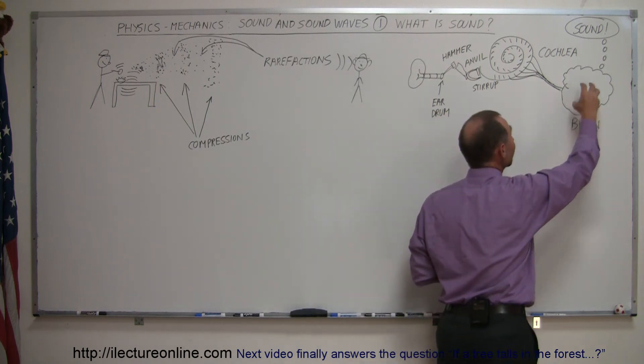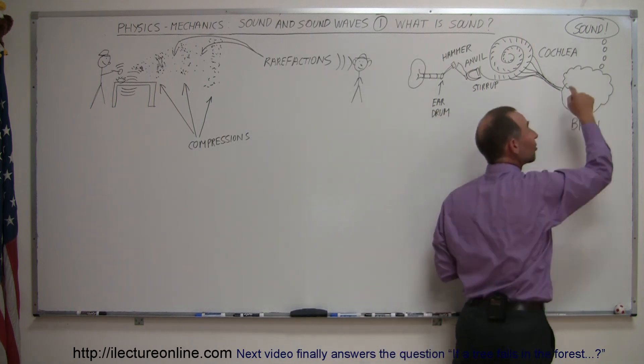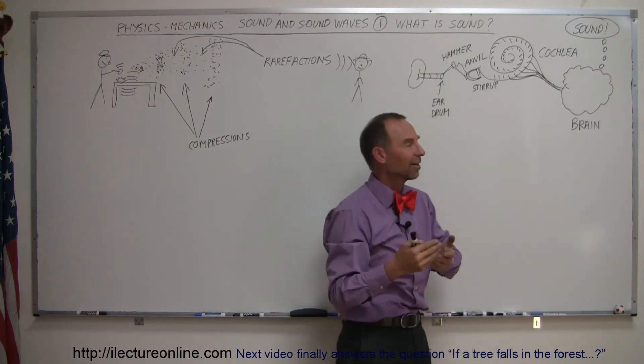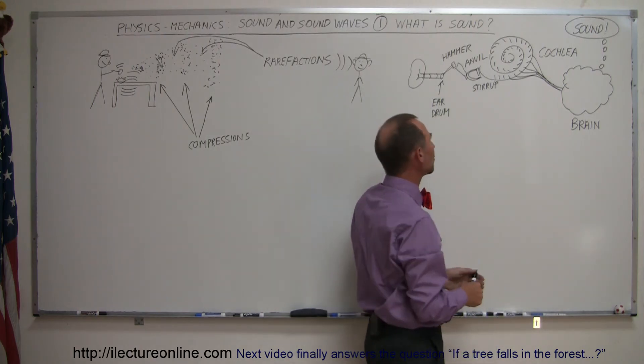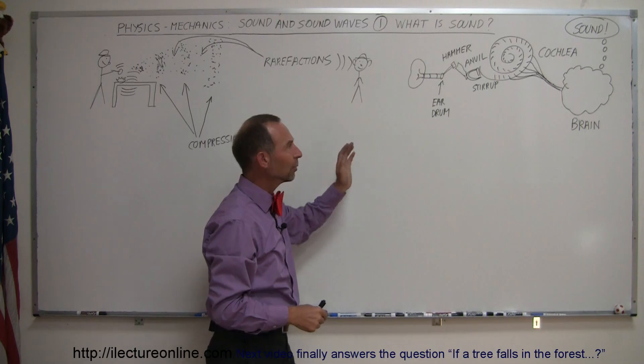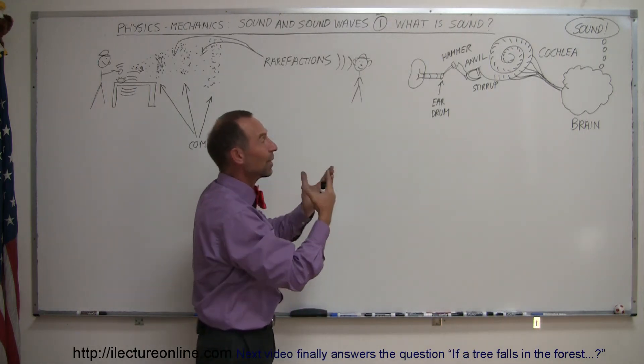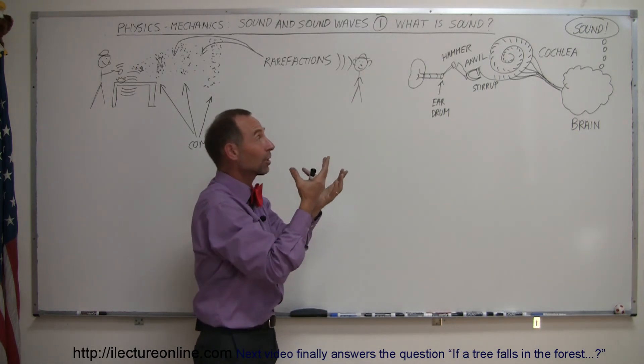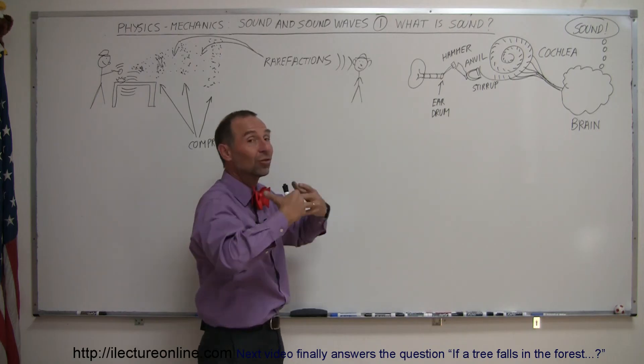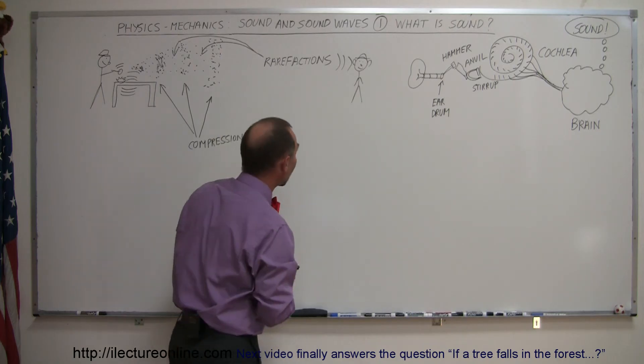What the brain then does, it takes that and turns that into a sound. And that's why we hear a sound. Marvelous technique, marvelous way in which this works. But until it reaches the brain, it's just vibrations. The brain is actually the organ in our bodies that turns it into sound and into something that we can recognize.